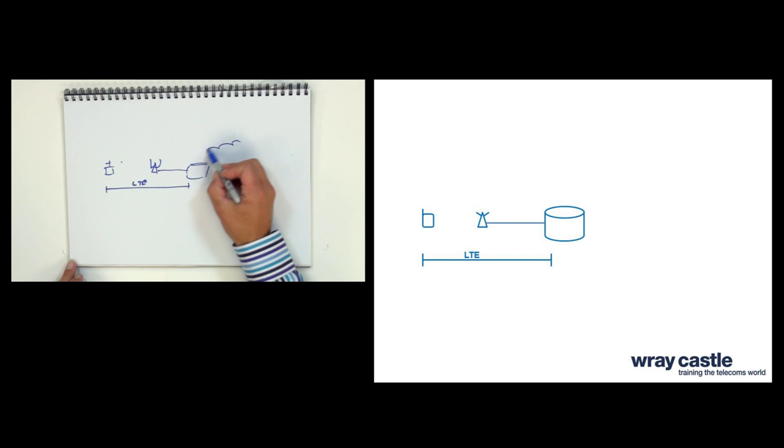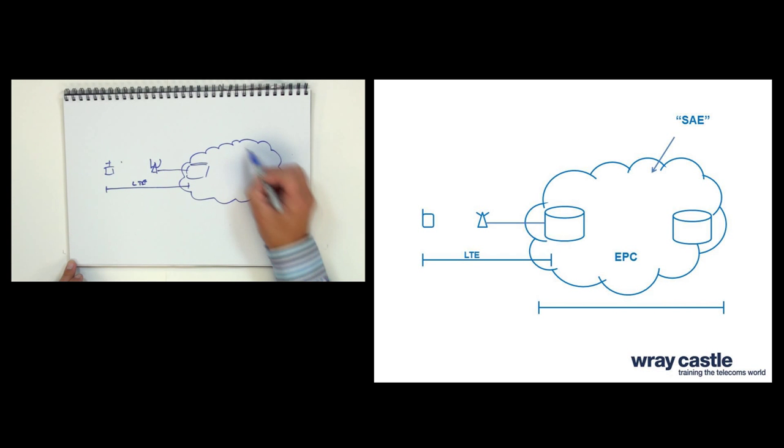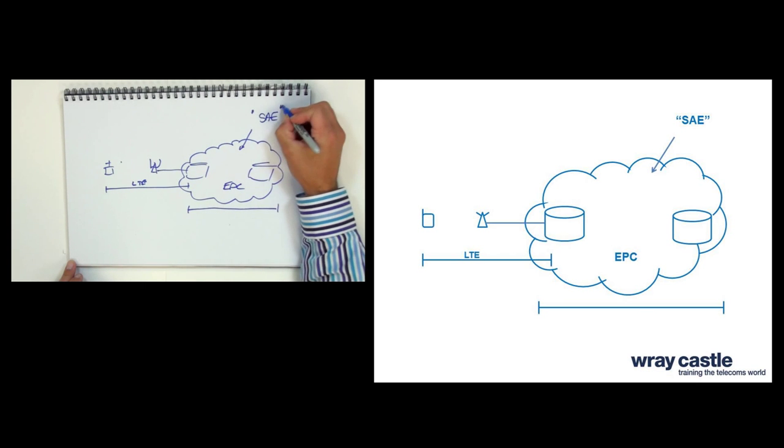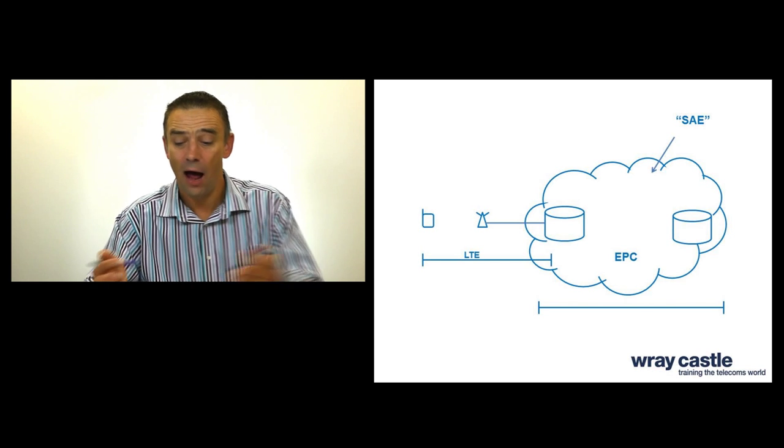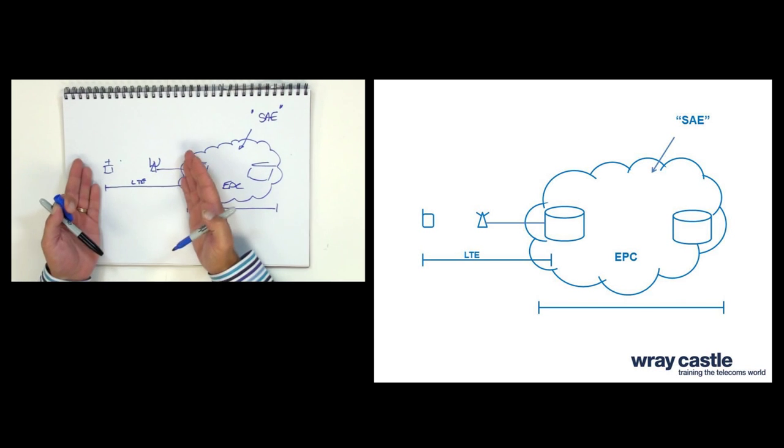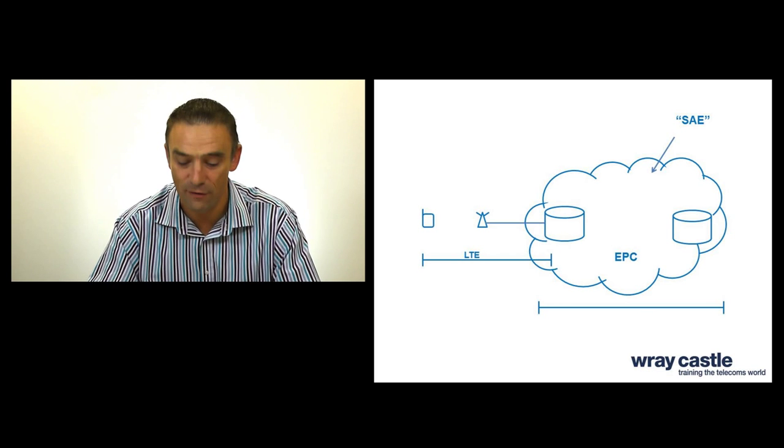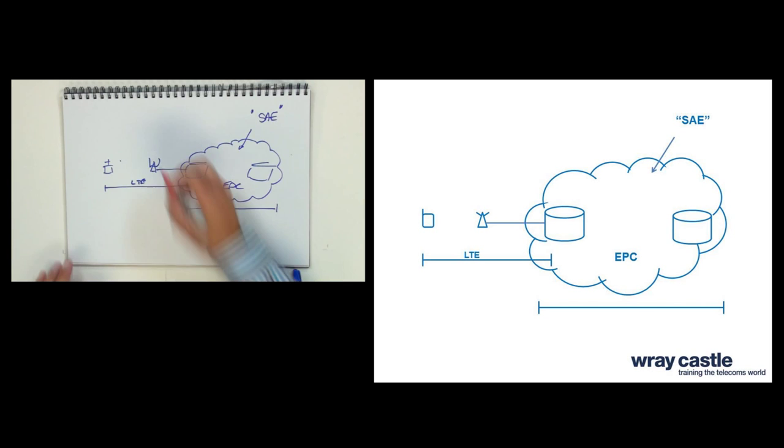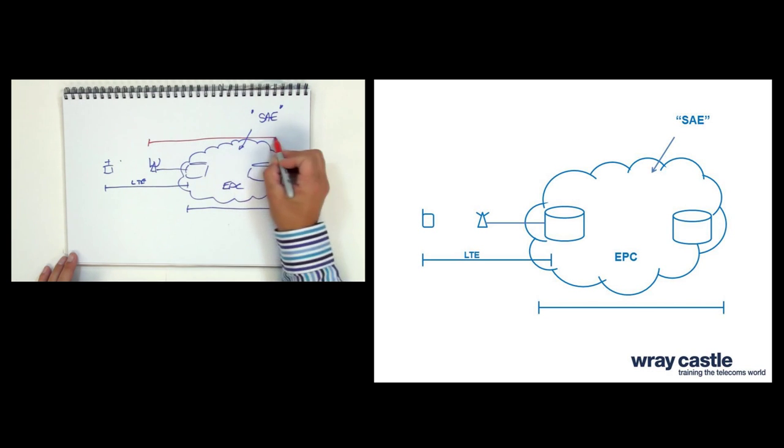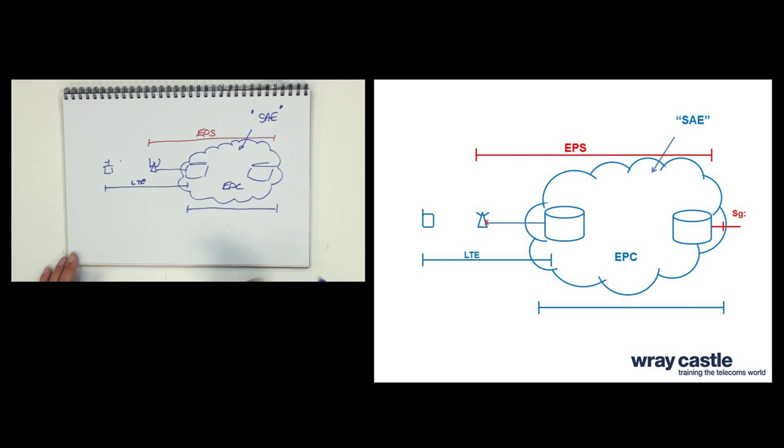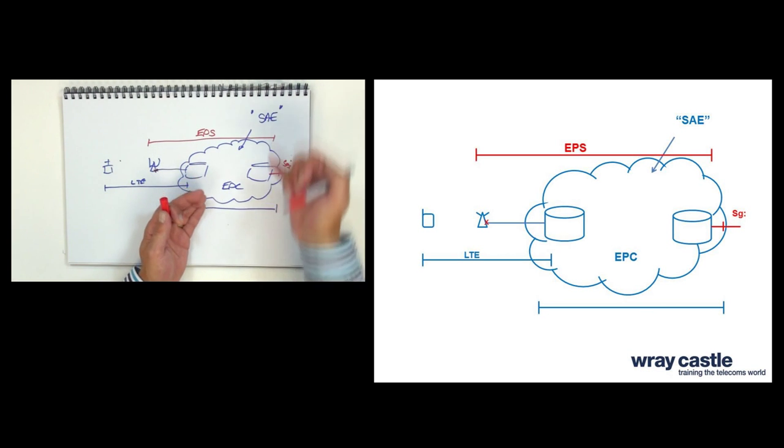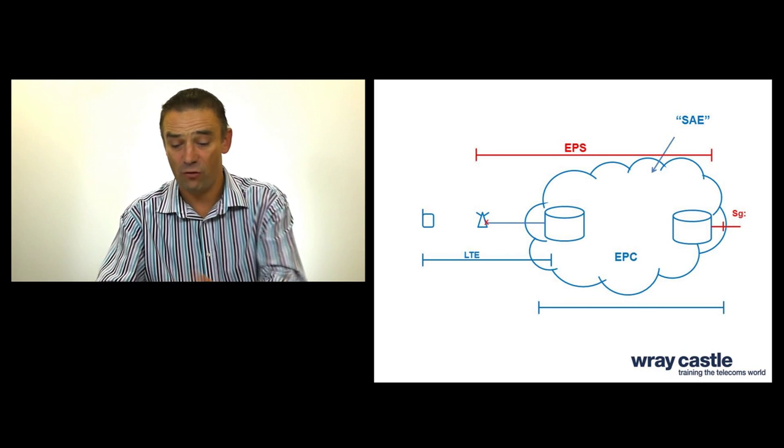When we look at the core network itself, we're talking about an all IP core network called the EPC or evolved packet core. Sometimes you'll see people referring to SAE, system architecture evolution, and that's the EPC side. So LTE is long-term evolution of the radio access network. EPC is the long-term evolution of the packet core. And another term you quite often hear is the EPS, the evolved packet system. Now the EPS is your IP connectivity which extends all the way from the base station to the edge of my core network. So LTE is the radio part, EPC or SAE is the core network part, and that's really what we're going to have a look at today.